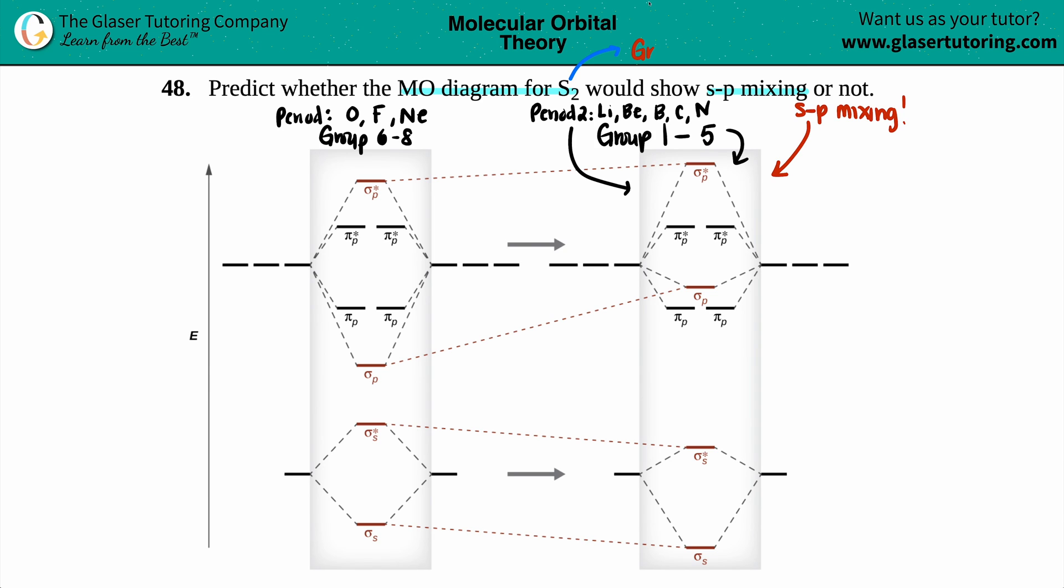And sulfur is right below oxygen, so sulfur is in group - whoa, that is not a good color to mix - but sulfur is in group 6. Technically it could be 6, 6A, or 16, but 6 is the lucky number here, so that's over here.